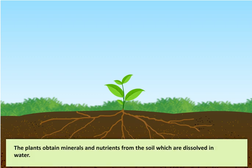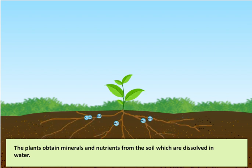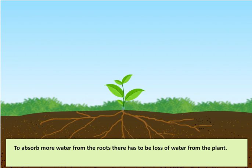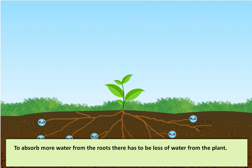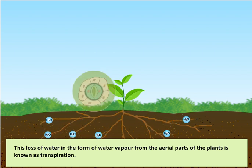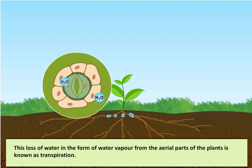The plants obtain minerals and nutrients from the soil which are dissolved in water. They absorb water with the help of roots. To absorb more water from the roots, there has to be loss of water from the plant. This loss of water in the form of water vapour from the aerial parts of the plants is known as transpiration.